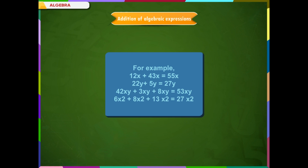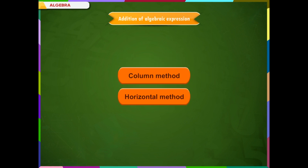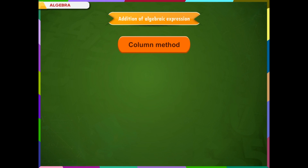Algebraic expressions are added using two methods: the Column method and the Horizontal method. Let us understand how to use the Column method to add two or more algebraic expressions.